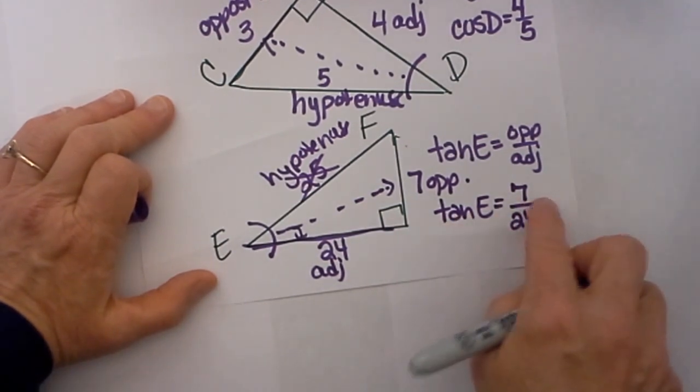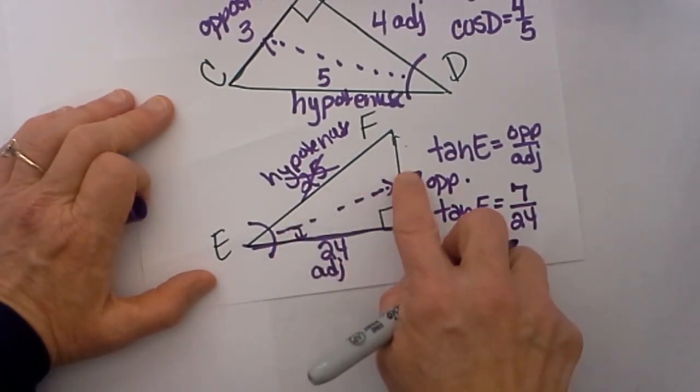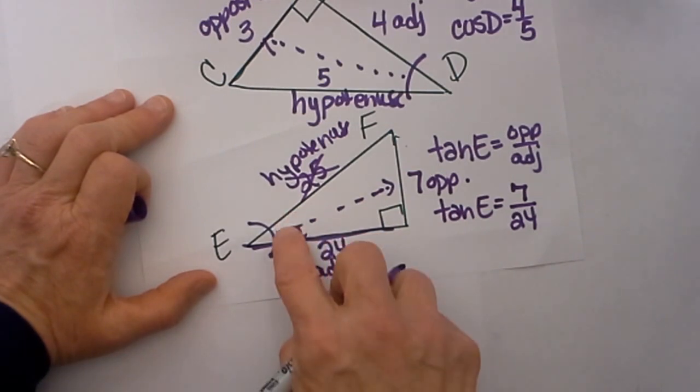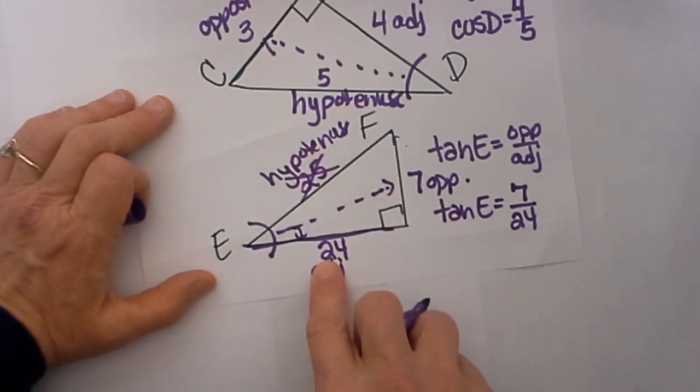That is how you would set the tangent ratio up, and that is how you would find your opposite, adjacent, and hypotenuse for each of these triangles.